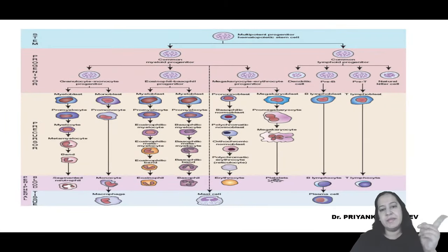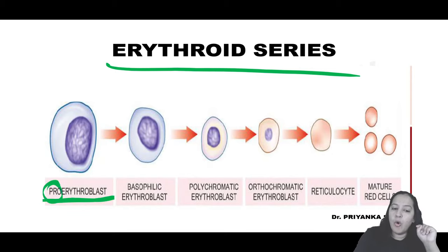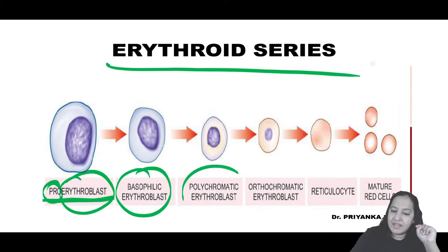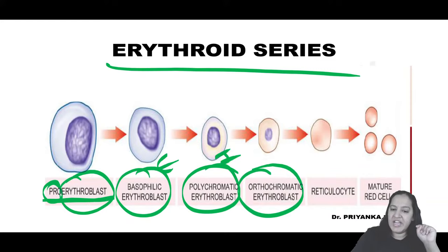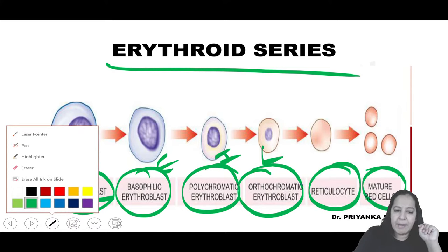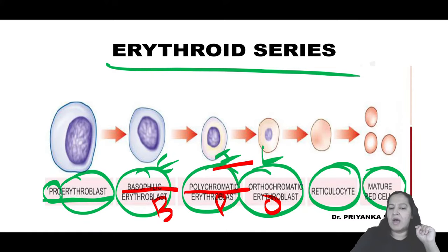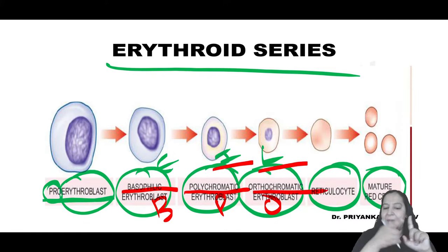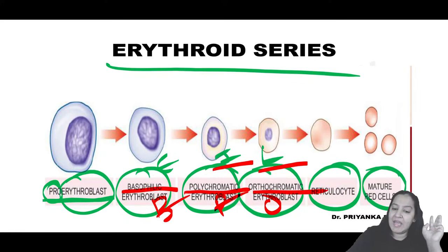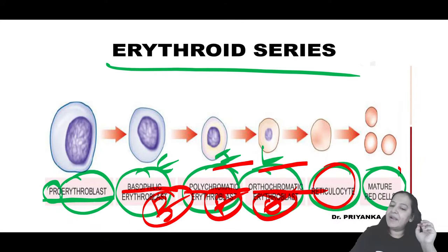RBCs are from the myeloid series. The first cell in the erythroid series is pro-erythroblast. Then early erythroblast (also known as basophilic erythroblast), intermediate erythroblast (polychromatic erythroblast), and late erythroblast (orthochromatic erythroblast). The mnemonic is BPO - basophilic, polychromatic, orthochromatic. Then reticulocyte and finally RBC. So the sequence is: pro-erythroblast → basophilic → polychromatic → orthochromatic erythroblast → reticulocyte → RBC. These are important MCQs - don't get confused if you remember the mnemonic BPO.